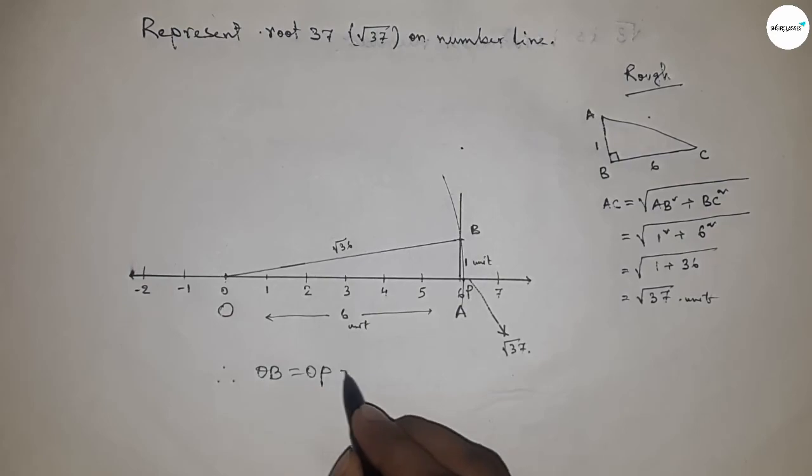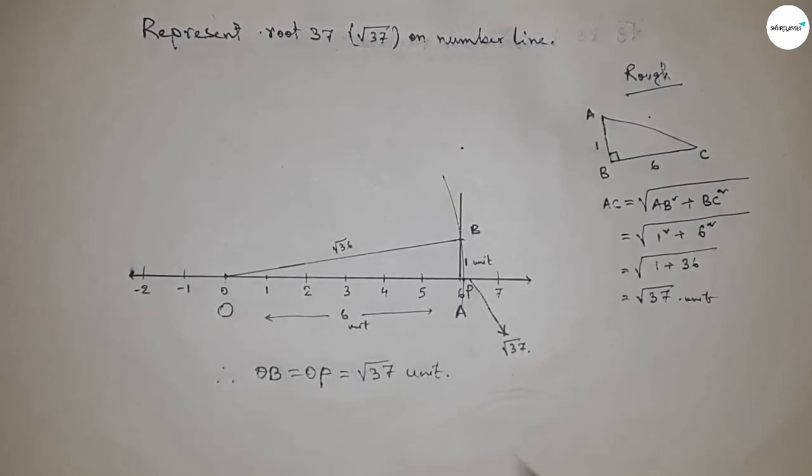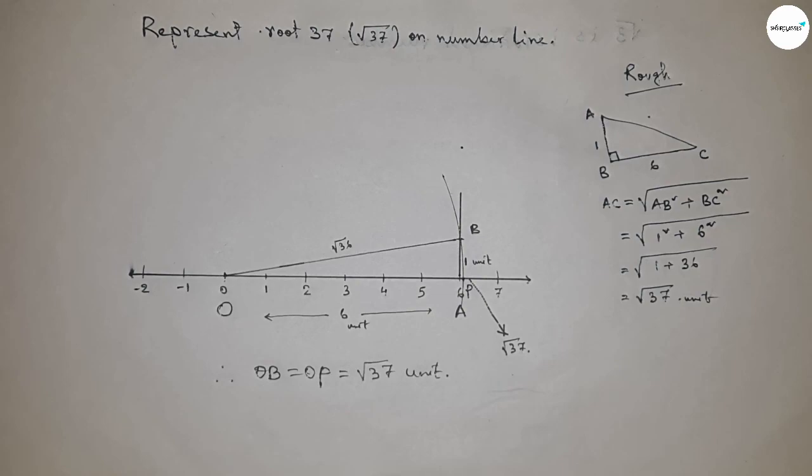Therefore, distances OB and OP are equal to √37 units. That's all. Thanks for watching. Please subscribe, like, and comment on my video.